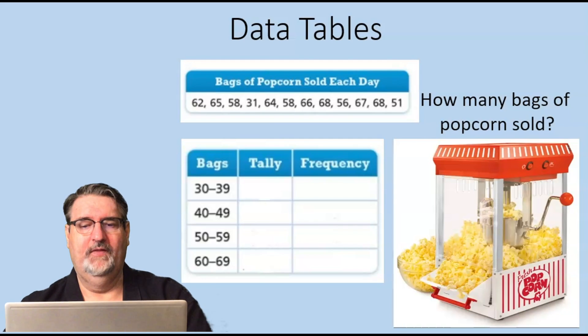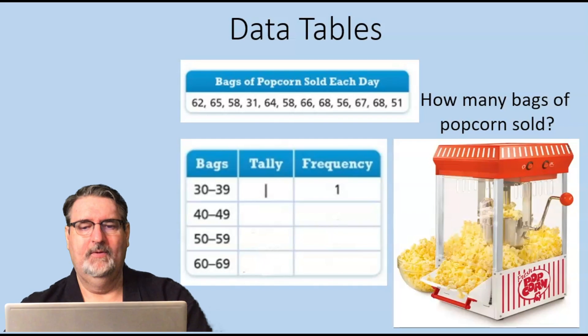So those are the numbers of bags of popcorn sold each day. Now we make a table right here, and so we have bags over on the left column, then we have a column for tallies, and then we have frequency. So in the first one where it says 30 to 39 bags, we make a tally mark and we write a one.